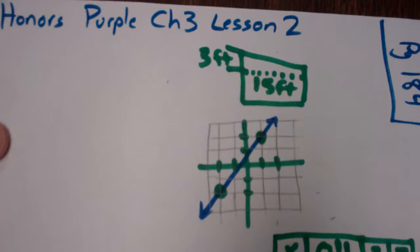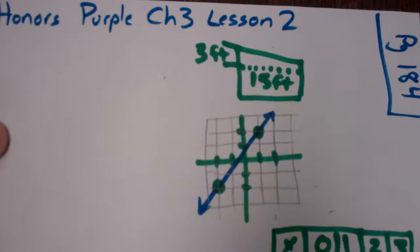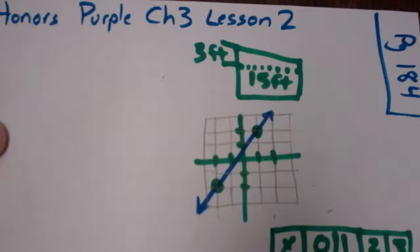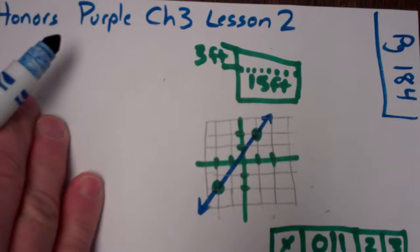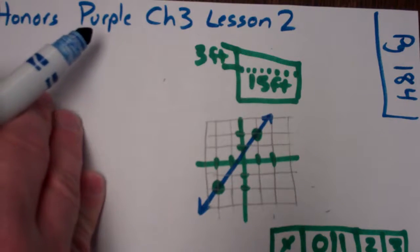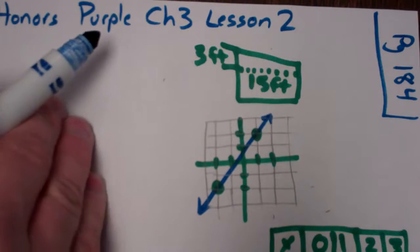All right, this is the Honors Purple Book, Chapter 3, Lesson 2. I'm doing the guided practice off page 184. This lesson is about slope, which is another name for constant rate of change, which we've talked about. I a lot of times call it the helicopter, the difference of y over difference of x, all of that stuff that we've worked on before.